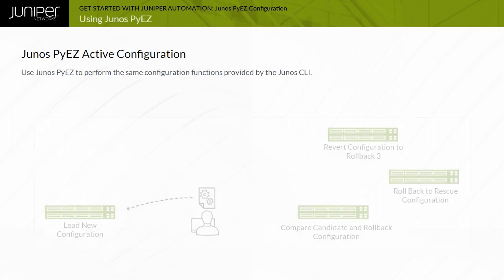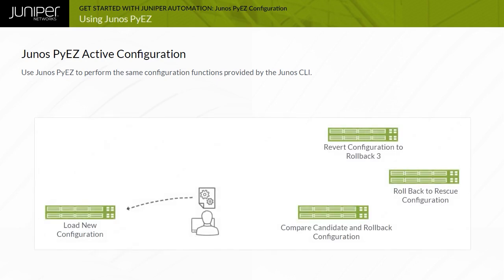When you configure a Junos device, a candidate configuration is created that is initially populated with a copy of the active configuration running on that device. You modify the candidate configuration and, once satisfied with the modifications, commit the changes. The commit action causes the candidate configuration containing the changes to become the active configuration.